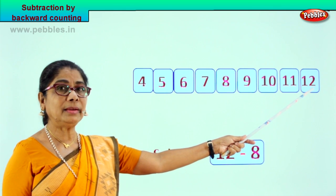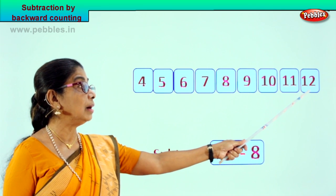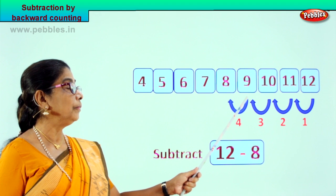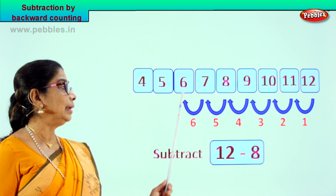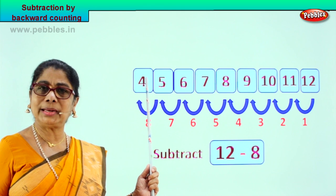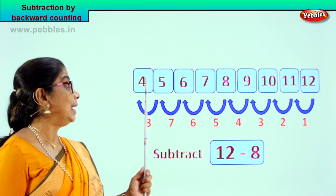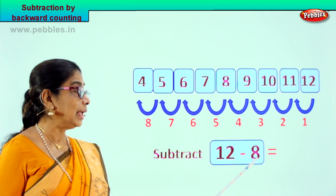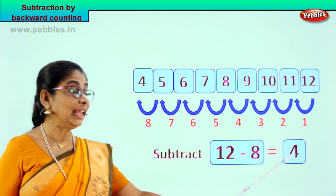From 12 you must count backward 8 steps. So you have 12 here and we are going to count because minus 8 — count 8 steps backward. Start. 1, 2, 3, 4, 5, 6, 7, 8. We came backward counting 8 steps. Our answer is 4. 12 minus 8 is equal to 4.